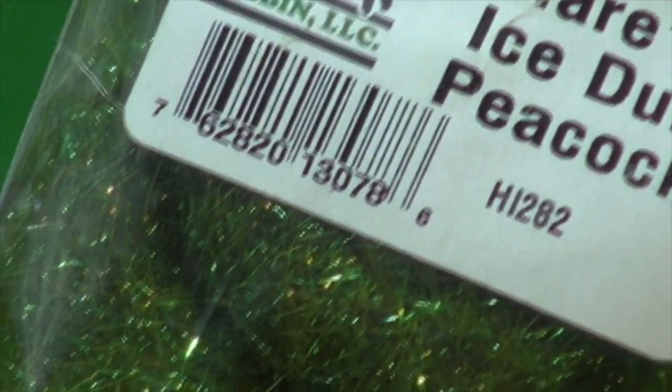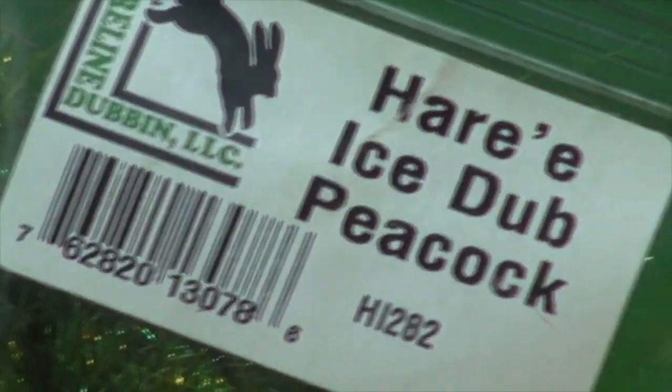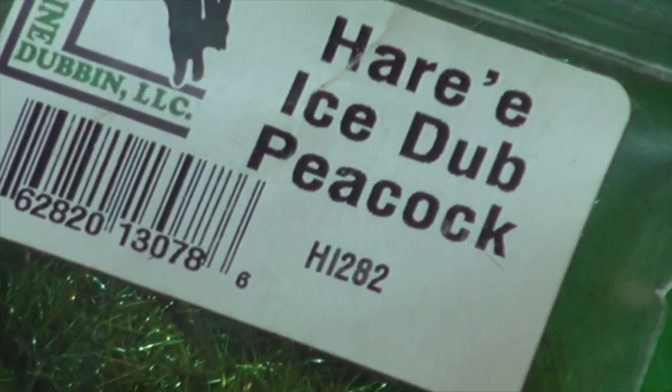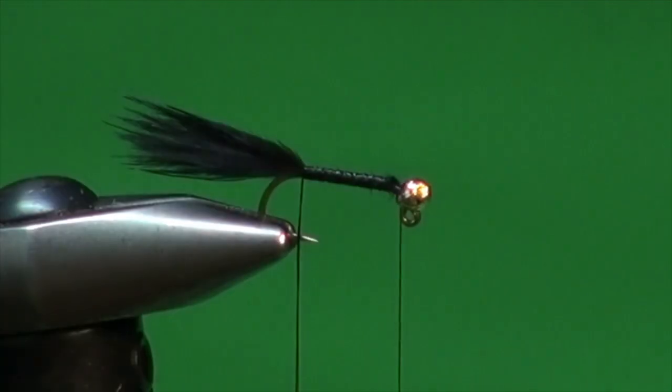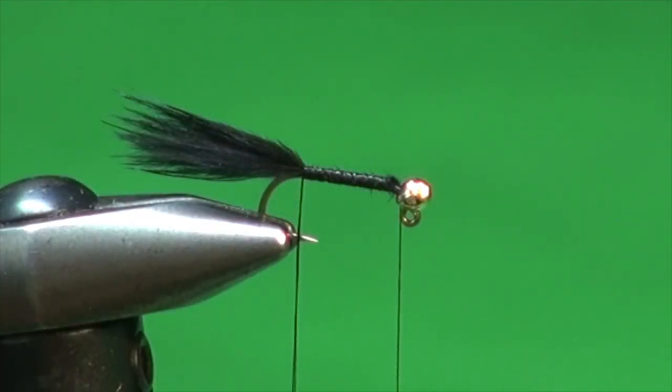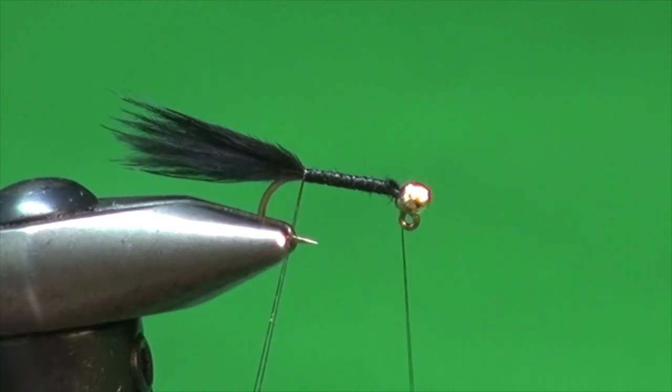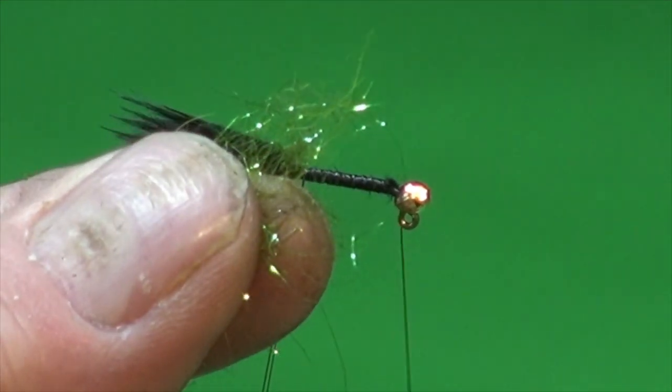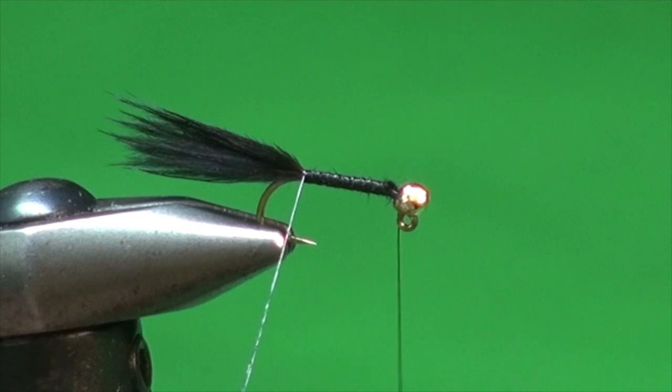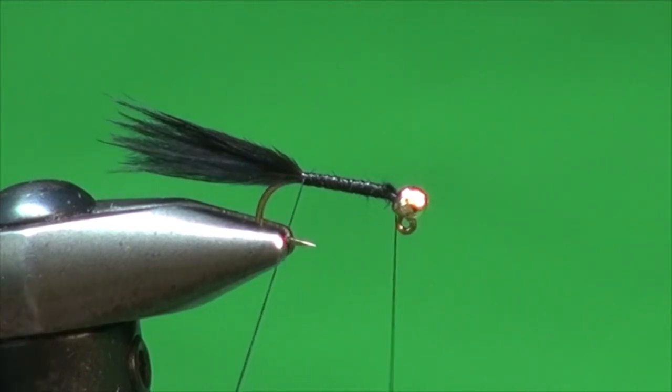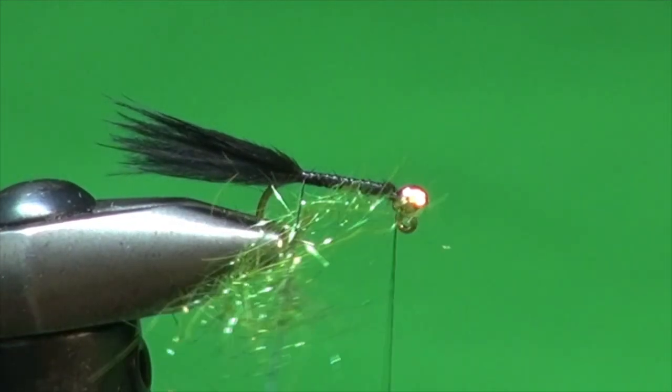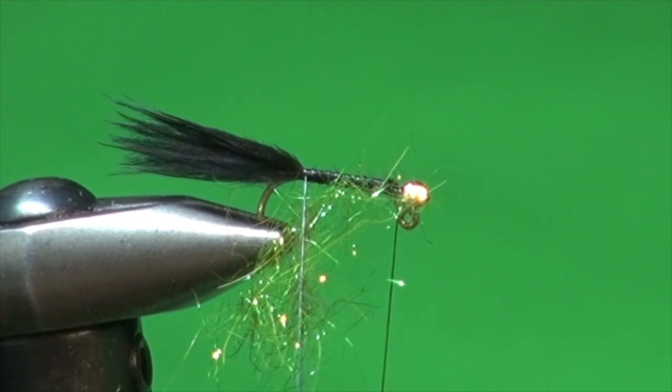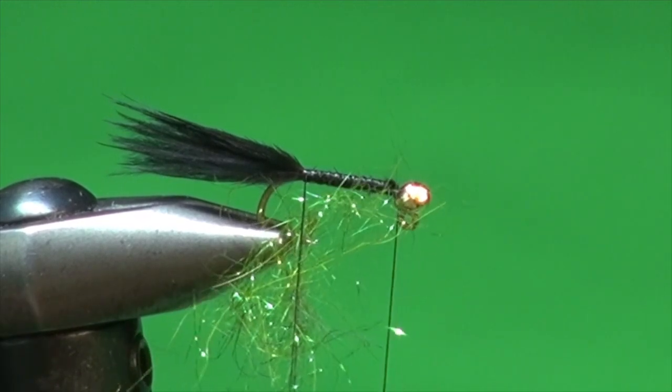For the body on this fly, we're going to use some Hares Ice Dub from Hairline Dubbin. Great stuff. It's a blend of Ice Dub and Hares Mask. So it's kind of soft and sparkly all together. And we're just going to take a pinch out of the clump. Open the loop at the bottom. And slide that up into position. And just build our loop with little pinches of dubbing. Not very much. You can remember dubbing is kind of a cumulative thing.